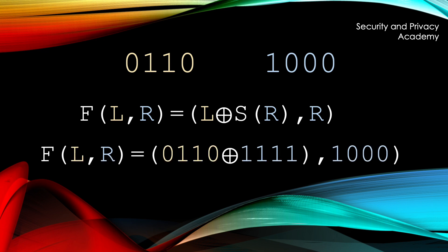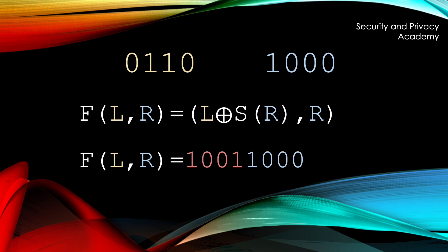XORing the inner part yields this result. Naturally, you run the Feistel network again on the right side to obfuscate those bits as well. But for simplicity reasons, let's look at decryption now.